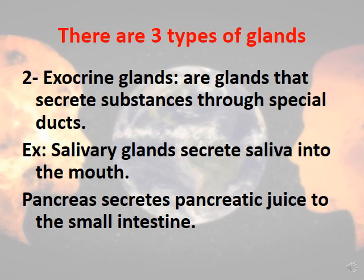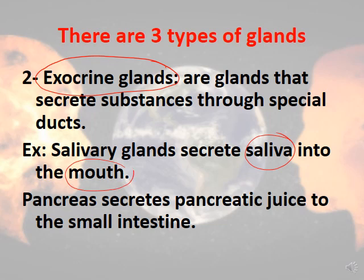The second type of gland is called exocrine glands. Exocrine glands secrete substances through special ducts and not directly into the blood. An example is the salivary glands, which secrete saliva inside the mouth through special ducts. The pancreas also secretes pancreatic juice into the small intestine. So exocrine glands secrete through special ducts, whereas endocrine glands secrete directly into the blood.